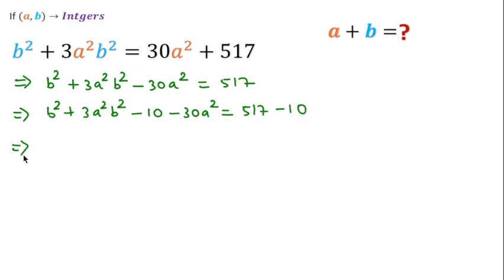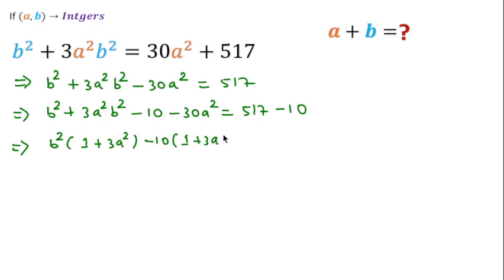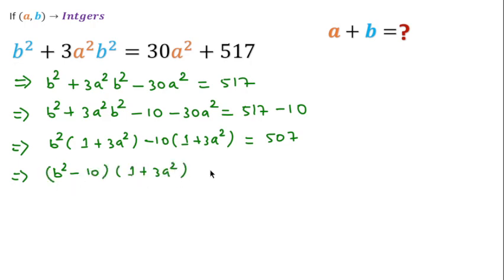Now I will take b² as a common factor from the first two terms, giving (1 + 3a²). I will also take −10 common, writing −10·(1 + 3a²). This gives (b² − 10)·(1 + 3a²) = 507.